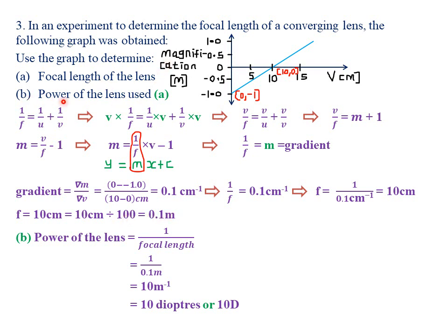For part B, they wanted the power of the lens used. The power of a lens equals the reciprocal of the focal length expressed in meters. Since the focal length is 0.1 meters, the power = 1 ÷ 0.1 = 10 per meter, which equals 10 diopters, abbreviated as 10D.